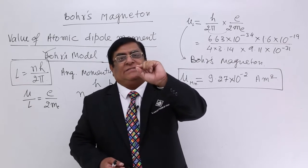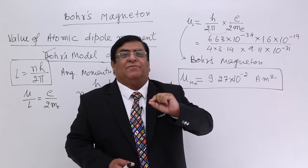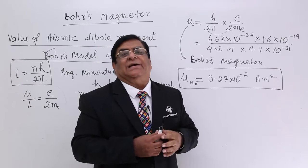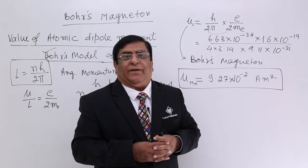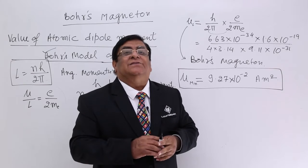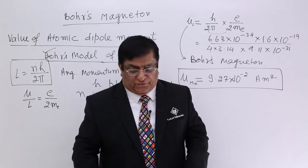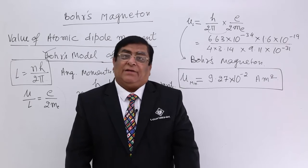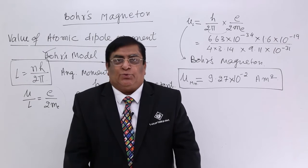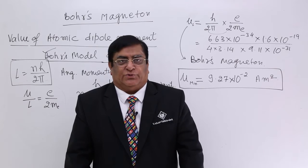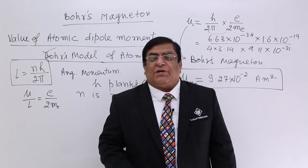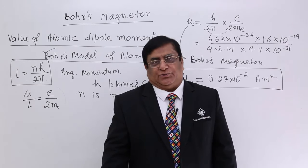If we have a single electron, does it have a magnetic property? The answer is yes — it has a magnetic property. Why? Because electrons are spinning. In the nature of our universe there are two types of motions: spinning motion and rotational motion.